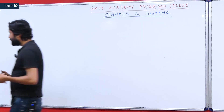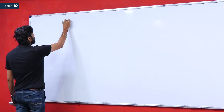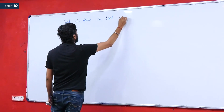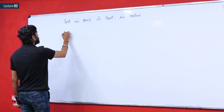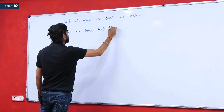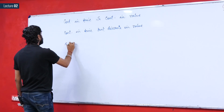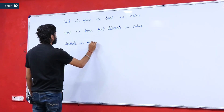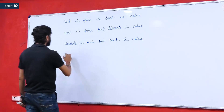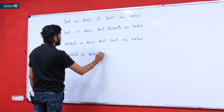On a primary basis, we can classify signals into four types: first, continuous in time and continuous in value; second, continuous in time but discrete in value; third, discrete in time but continuous in value; and fourth, discrete in both time and value.